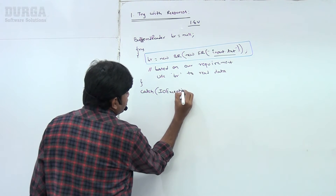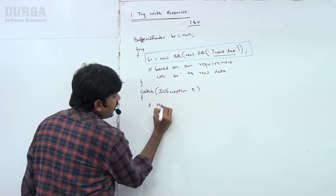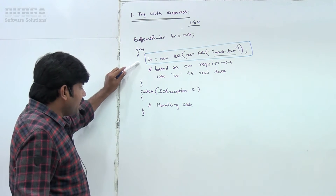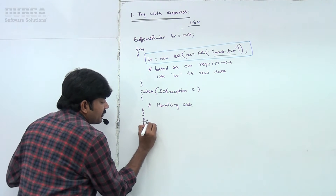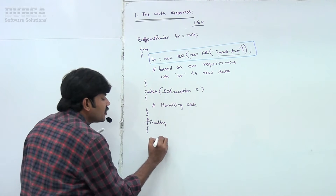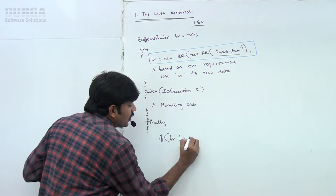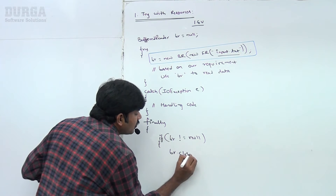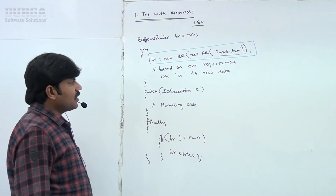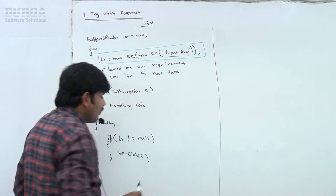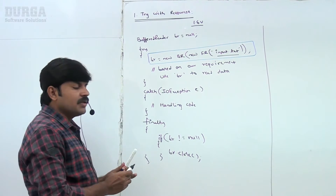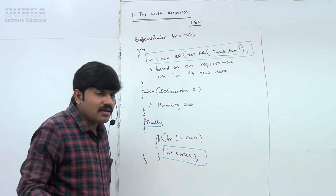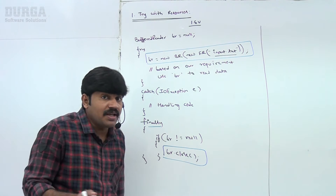Now, since we are performing I/O operations, an IOException may come. We write the corresponding handling code inside a catch block. So we have try, catch, and then finally. Inside the finally block: if br is not equal to null, then br.close() — close the BufferedReader. This is the style until 1.6 version. Whatever resource you open, you close it inside the finally block.